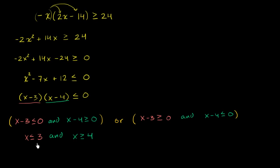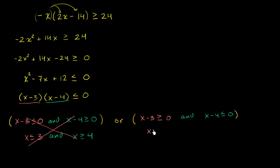What values of x are less than or equal to 3 and greater than or equal to 4? Anything less than or equal to 3 is not going to be greater than or equal to 4, and vice versa. So there's no x value that satisfies this first situation. Let's go to the second case: adding 3 to both sides gives x is greater than or equal to 3, and adding 4 to both sides gives x is less than or equal to 4.